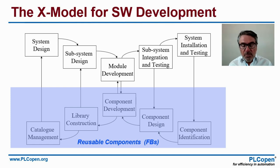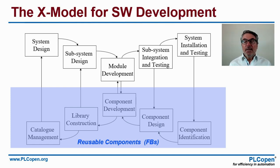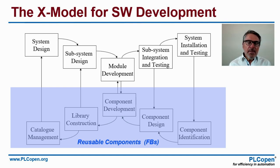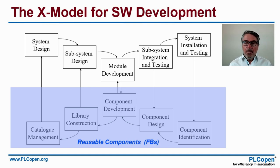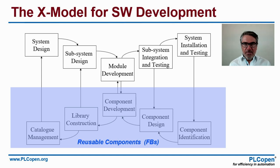On the bottom of the X-model, going from right to left, you get component identification, component design, and component development. With that, you create a library of reusable components which, via a catalog, you can make available in the next phases or the next projects. This helps you identify reusable components and make them available.